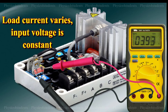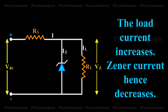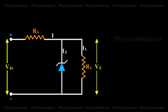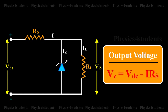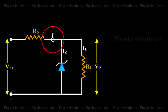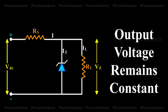Load current varies, input voltage is constant. Let us consider that the load current increases, Zener current hence decreases, and the current through the resistance RS is a constant. The output voltage VZ is equal to VDC minus IRS. Since the total current I remains constant, output voltage remains constant.